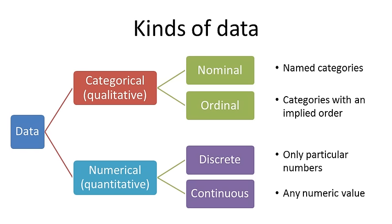Continuous data is where any value, in range, is allowed. Mass of the cars, children's heights. Any numeric value is possible, so that's continuous.